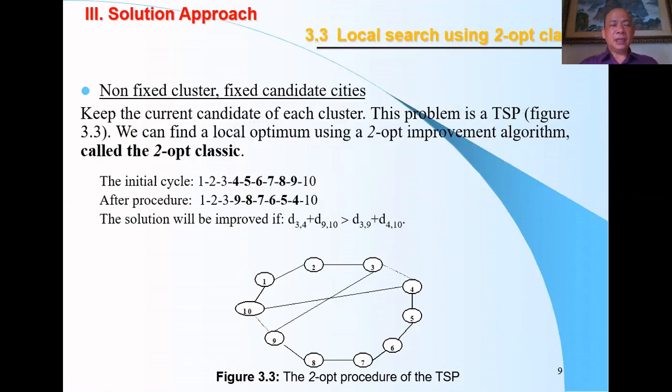Another assumption in the research is non-fixed clusters but fixed-candidate cities. We keep the current candidate of each cluster. The problem now is reduced to the TSP. You can see in Figure 3.3, and this algorithm we call 2-opt classic.